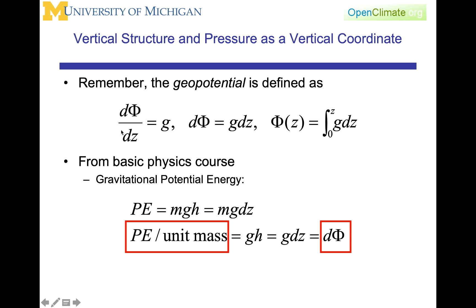Two or three slides ago, we defined d phi dz equal to g. If you go back to a basics physics course and look at the gravitational potential energy, that potential energy is mass times gravity times the height, which you can recast into mass times gravity times some increment of height dz. Divide by the mass and the potential energy per unit mass is equal to gh equals g dz equals the increment of geopotential, the increment of phi, because here they are. Here's the relationship here and here.